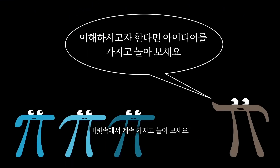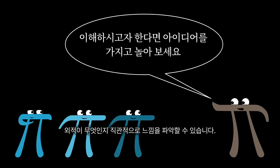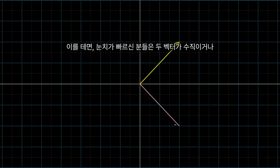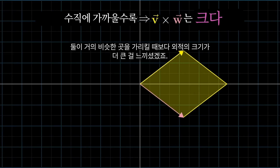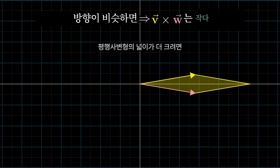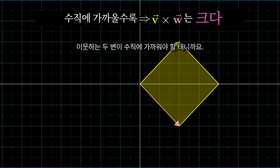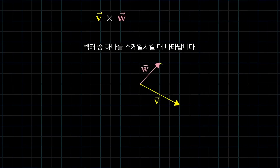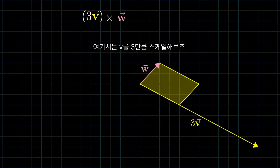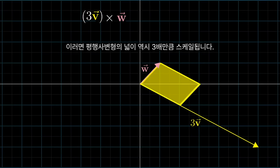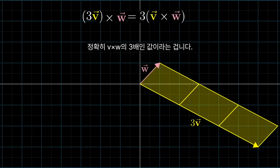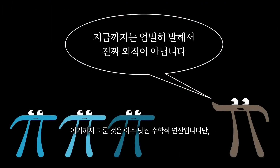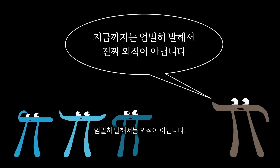As with any new operation you learn, I'd recommend playing around with this notion a bit in your head to get an intuitive feel for what the cross product is all about. For example, you might notice that when two vectors are perpendicular, or at least close to being perpendicular, their cross product is larger than it would be if they were pointing in very similar directions, because the area of that parallelogram is larger when the sides are closer to being perpendicular. Something else you might notice is that if you scale up one of those vectors — perhaps multiplying v by 3 — then the area of that parallelogram is also scaled up by a factor of 3, so 3v cross w will be exactly three times the value of v cross w. Now, even though all of this is a perfectly fine mathematical operation, what I just described is technically not the cross product.